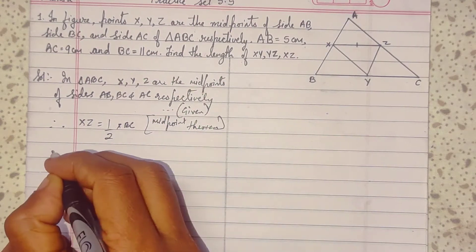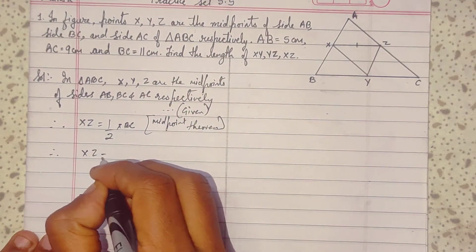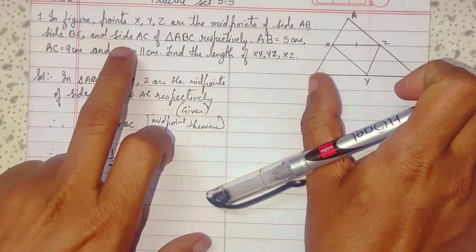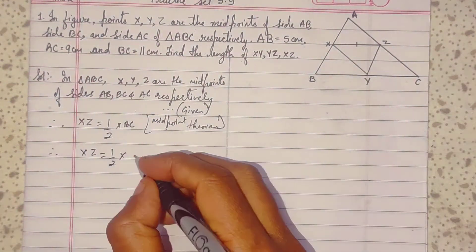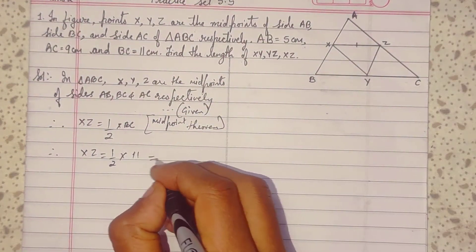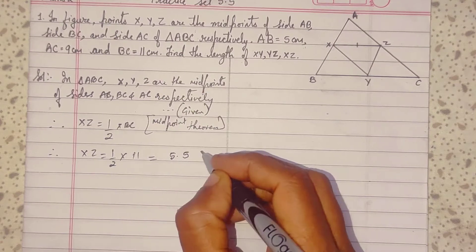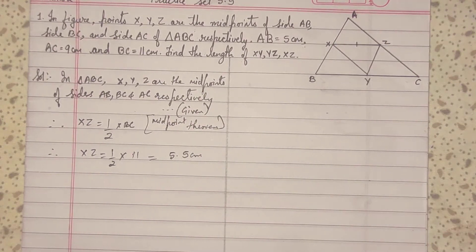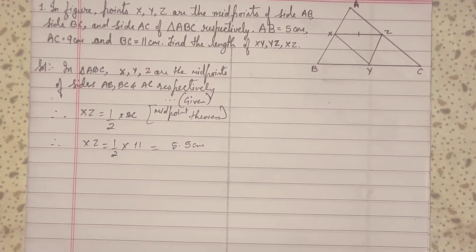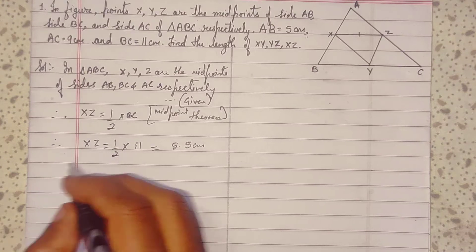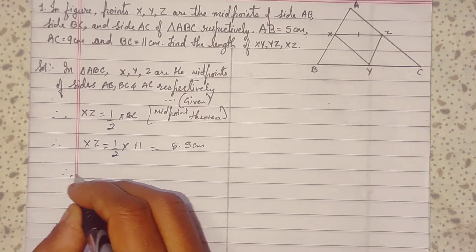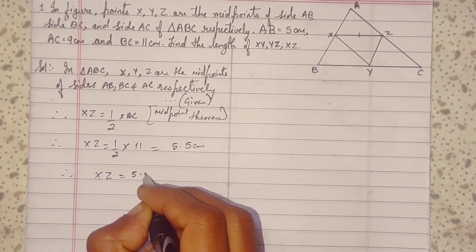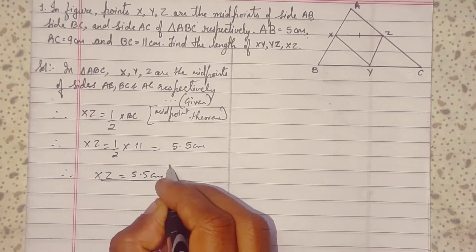We write: XZ equals half of BC by the midpoint theorem. Therefore, XZ equals half of 11, which is 5.5 cm.